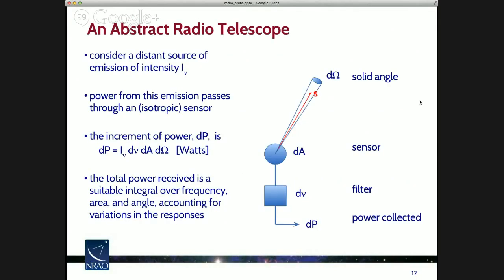What about a radio telescope? If you consider a distant source of emission with some intensity in some direction, the power passes through a sensor and increments power in the sensor — intensity times some differential frequency, area, and solid angle, giving power in watts. The power you collect from a distant source is a suitable integral over frequency, area, and angle. For your telescope, you have to understand the response: how much collecting area it has and what the shape of the frequency sensitivity is.